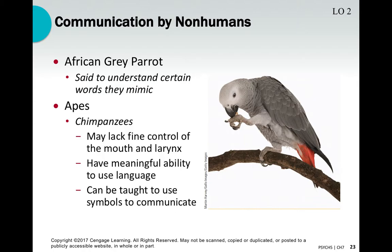Primates like chimpanzees are also capable of using forms of vocalization — more like grunts, hoots, and hollers — and they're capable of learning sign language. However, as far as putting together speech the way I'm speaking right now, apes and chimpanzees don't do that because they literally lack the fine physical control of using their mouth, their larynx, and their vocal cords. It's not just having the brain — it's also having the physical parts to produce sound the way we do.